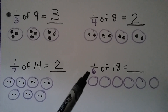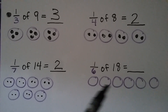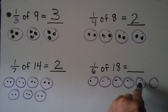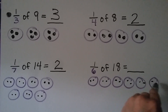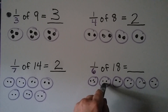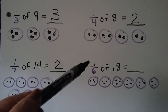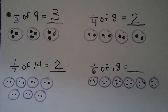Here we have one sixth of eighteen. The denominator is a six, so we make six groups. We put one at a time, going back and forth, taking turns until we do eighteen: one, two, three, four, five, six, seven, eight, nine, ten, eleven, twelve, thirteen, fourteen, fifteen, sixteen, seventeen, eighteen. In one of the groups the numerator is a one — there's three counters, so we know one sixth of eighteen is equal to three.